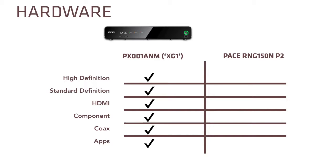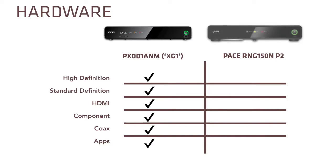However, it's important to know that apps are available on the XG1 only when used in high definition mode. If the customer configures the box for standard definition, the apps menu goes away. The XG1 DVR is also designed to work with the new Comcast XR2 remote control. We'll talk about the remote control in a moment, but for now let's look at the other X1 compatible box, the RNG150N P2.